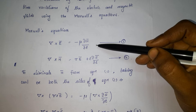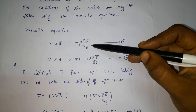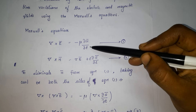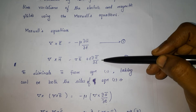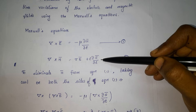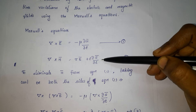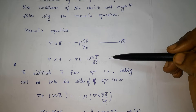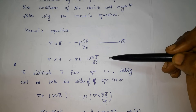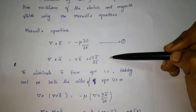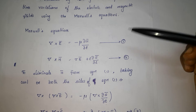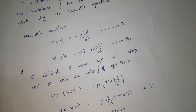One Maxwell equation is derived from Faraday's law, expressed in point form or differential form. The second equation is derived from Ampere's circuital law. Using these two Maxwell equations, we are going to find the general wave equation for electric field and magnetic field. First, I am going to derive the general wave equation for electric field.